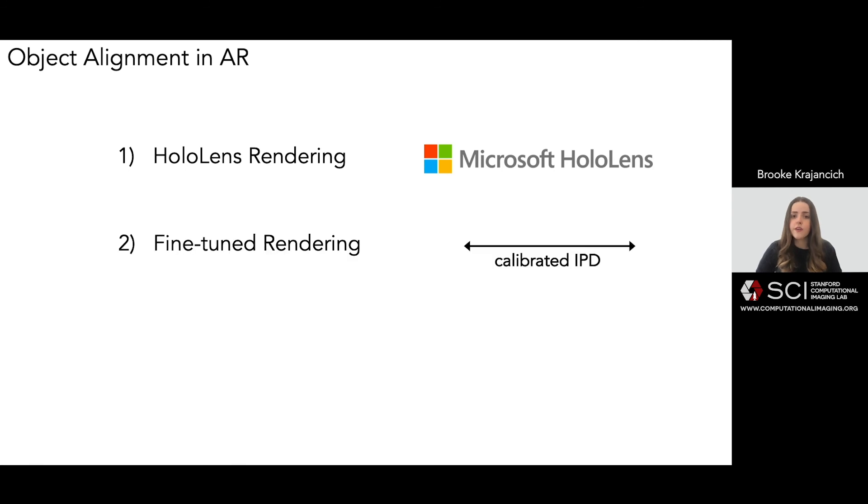HoloLens rendering, which was that provided by the mixed reality SDK in Unity. Fine-tuned rendering, in which similar to the VR experiment, we conducted an initial user in the loop IPD calibration, asking them to align their virtual target with the physical one at a distance of two meters. And our gaze contingent rendering.